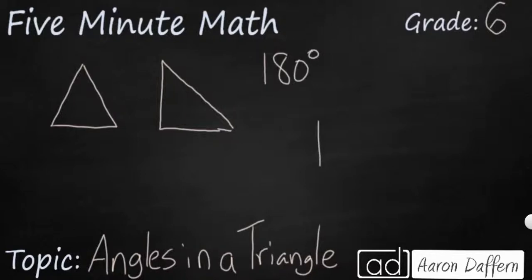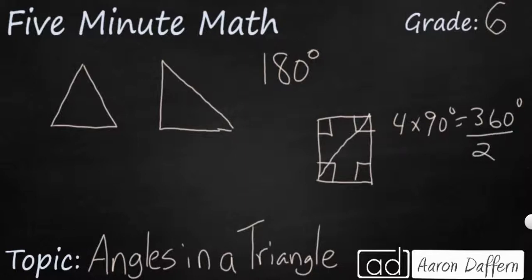An easy way to keep that in mind is to think of a square. A square is made of four right angles. So four right angles is going to be four times 90 degrees, and that's going to make 360. The reason why we keep a square in mind is because a square or even a rectangle can always be cut diagonally into two triangles. So if we take that 360 and divide it by two, you're going to get your 180.